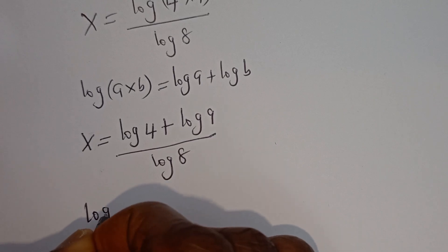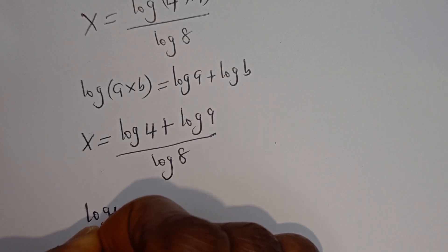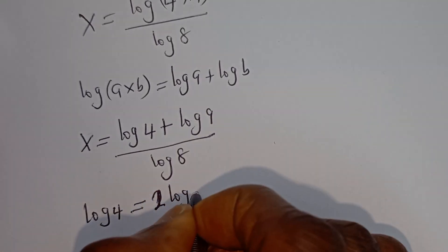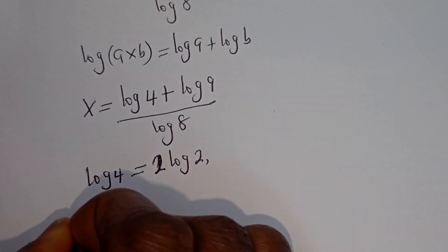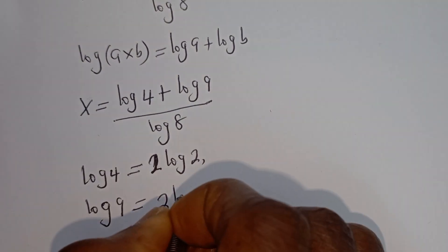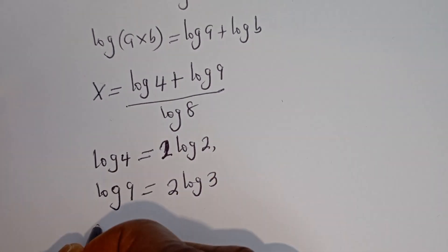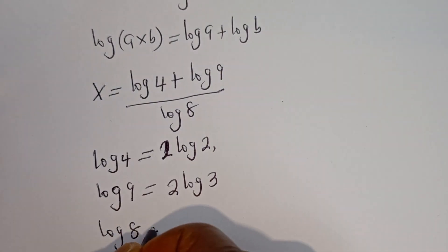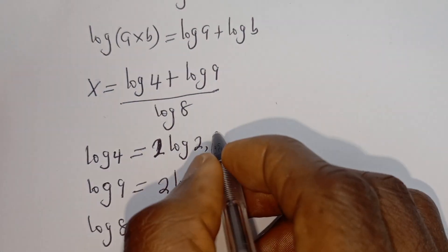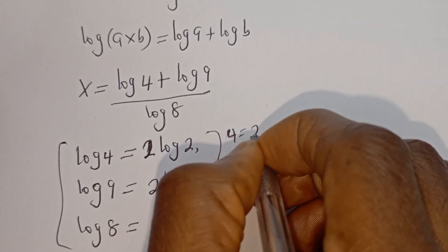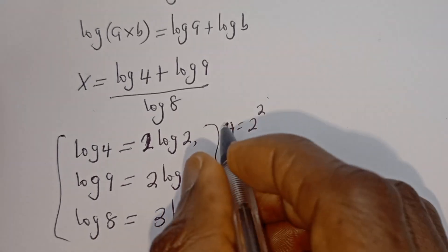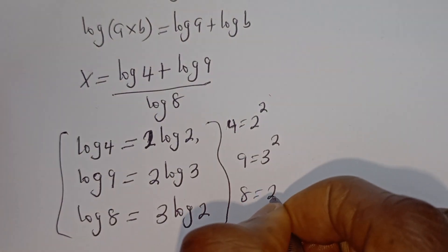So we have log 4 plus log 9 over log 8. Now, log 4 is equal to 2 log 2, log 9 is equal to 2 log 3, and log 8 is equal to 3 log 2. That is because 4 is equal to 2 squared, 9 is equal to 3 squared, and 8 is equal to 2 to the power of 3.